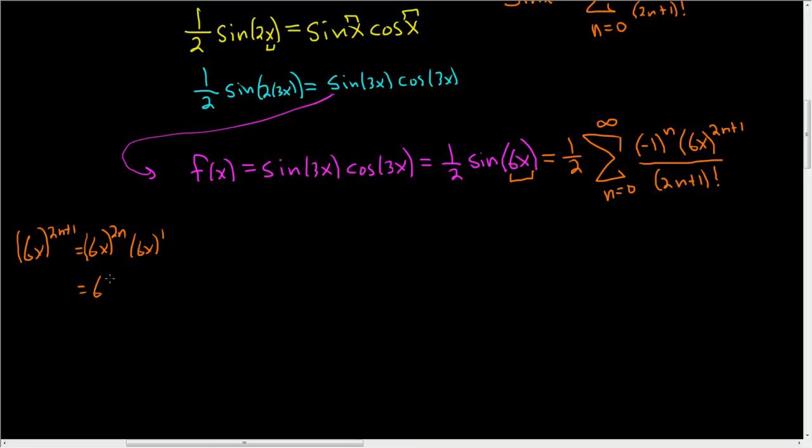Actually, there was an easier way to do this, but it's too late. x to the 2n, 6x to the 1. So this is 6 to the 2n plus 1, x to the 2n plus 1.